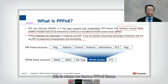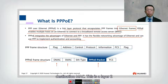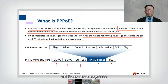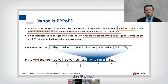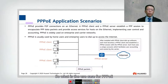Here we have a PPPoE frame and a PPPoE packet. You can see the source MAC, destination MAC — this is Layer 2 — along with the Ethernet type and frame check sequence. This shows how PPP is encapsulated inside the Ethernet frame.